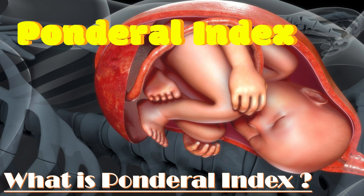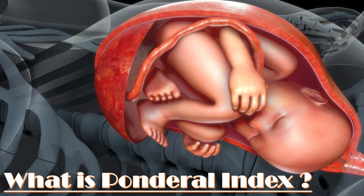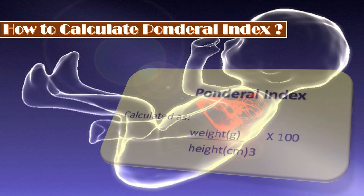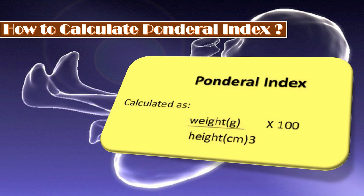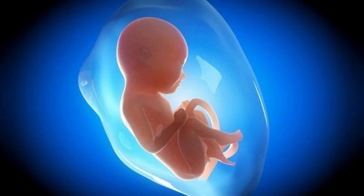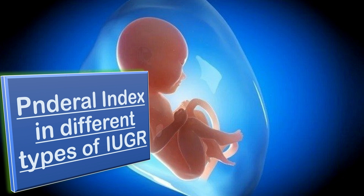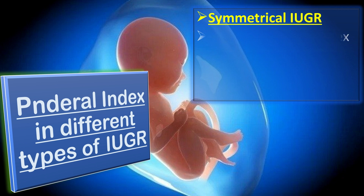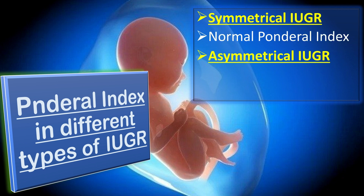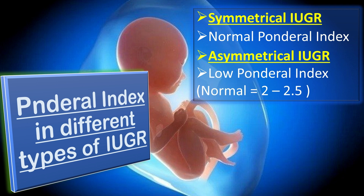Ponderal index in a fetus is calculated as weight in grams divided by height in centimeters cubed, multiplied by 100. Ponderal index differs in different types of IUGR: there is a normal ponderal index in symmetrical IUGR and a low ponderal index in asymmetrical IUGR. The normal ponderal index is 2 to 2.5.